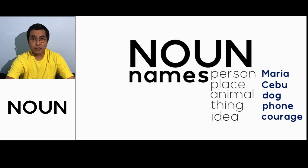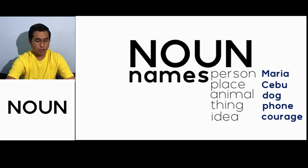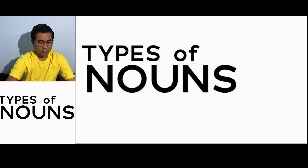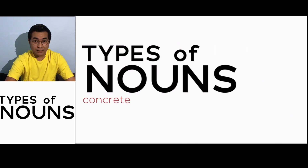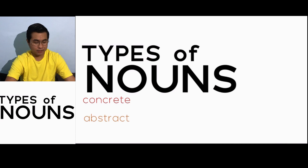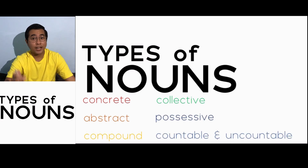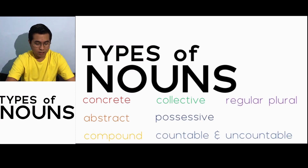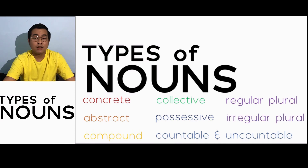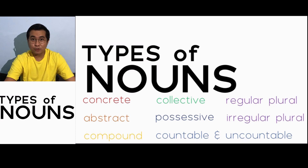So for this first part about nouns, we will talk about its types. What are the different types of nouns? We have concrete, abstract, compound, collective, possessive, countable, and uncountable. We also have regular plural and irregular plural. These types of nouns will be covered in the remaining parts of this video.